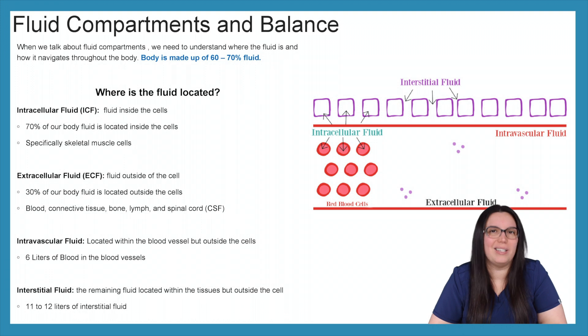When it comes to our extracellular fluid or ECF, that's the fluid that's going to be found on the outside of our cells. And that makes up approximately 30 percent of our body fluid. So that can be our blood, connective tissue, our bone, lymph and even spinal cord fluid such as CSF.